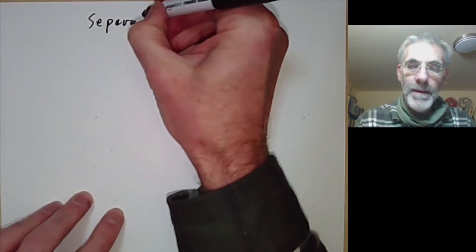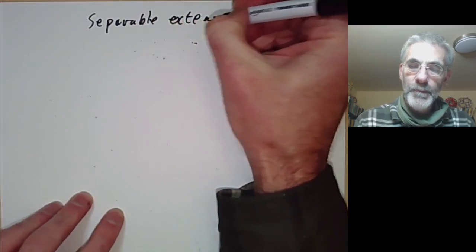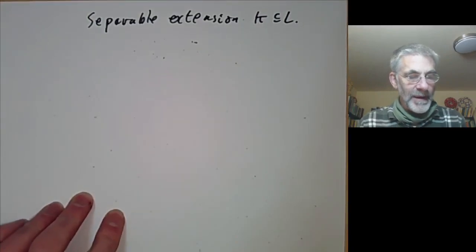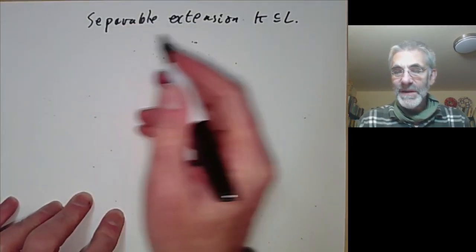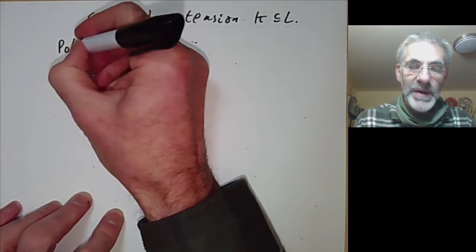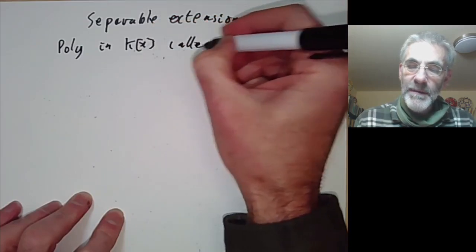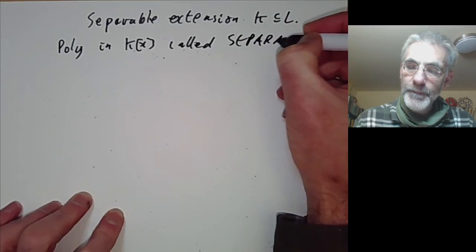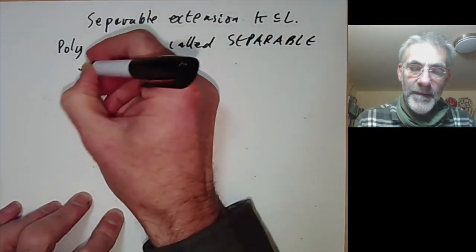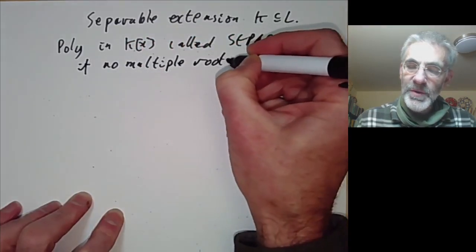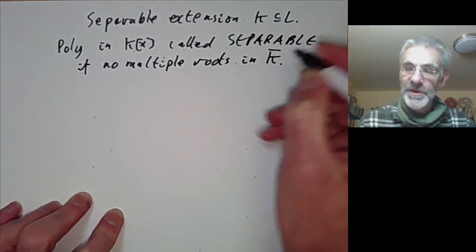This lecture is part of an online graduate course on Galois theory and will be about separable extensions of fields. So K contained in L. A polynomial with coefficients in K is called separable if it has no multiple roots — not in K, but in some algebraic closure of K.